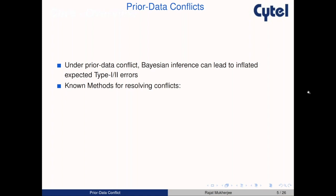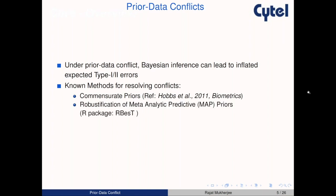There are known methods for resolving such conflicts. One is the commensurate prior. The next is robustification of meta-analytic predictive priors, achievable using the R package RBesT, downloadable from CRAN. There is also the use of discount functions, with the R package BasDP — D for discount and P for priors. We will focus mostly on robustification of meta-analytic predictive priors, and also on the discount function approach, which are suitable for two different settings: MAP priors for metadata, and the discount function for patient-level historical data.